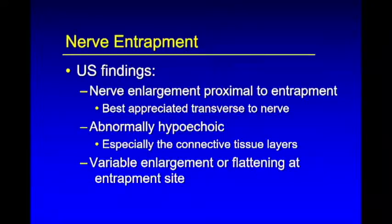What are the findings on ultrasound? Anywhere in the body when you have an entrapped nerve, the nerve will be enlarged, hypoechoic, and edematous at and proximal to the entrapment site. Every nerve has two or three precise anatomic locations where it goes through a constricted area, making it prone to entrapment. When we scan over those potential sites, we look for an enlargement of the nerve, abnormally hypoechoic, and then as the nerve enters the compressed area it will flatten or may still be enlarged.